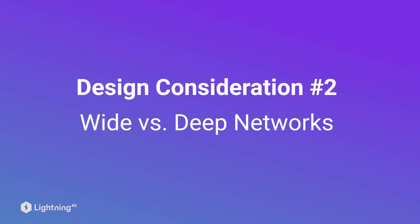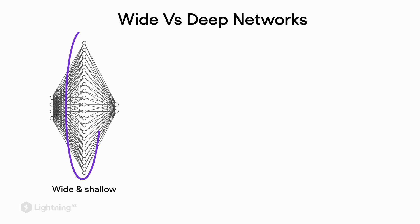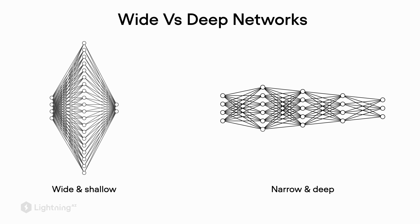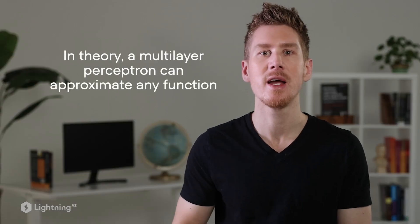To make it a nonlinear classifier, we need nonlinear activation functions at the hidden layers. The second design consideration is: should we make our multilayer perceptron deep — meaning multiple hidden layers — or wide, meaning more units in each hidden layer? On the left is a multilayer perceptron with one hidden layer that is very wide — a wide and shallow architecture. On the right is one with three hidden layers but narrow — a narrow and deep architecture. In theory, any multilayer perceptron with at least one hidden layer and a nonlinear activation function can approximate any function, so in theory we only need one hidden layer.